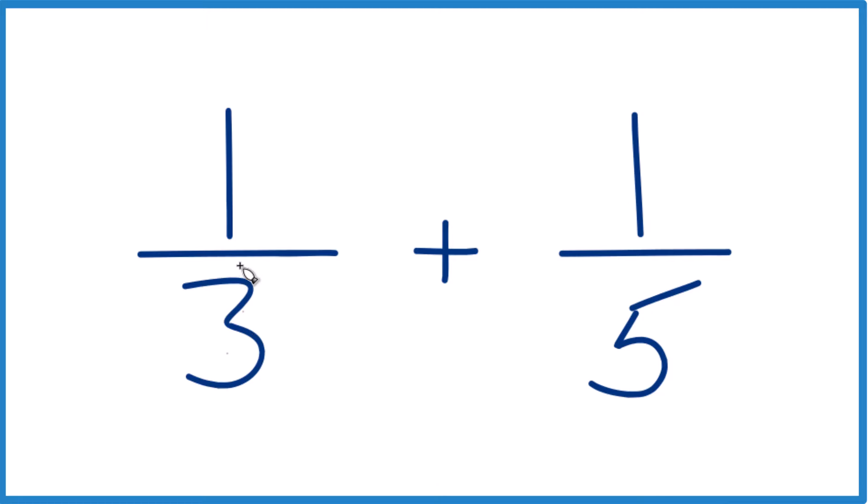What we need to do is get a common denominator here. So we want these to be the same. Because if we have a common denominator, the denominator is the same, we just add the numerators and we're done.